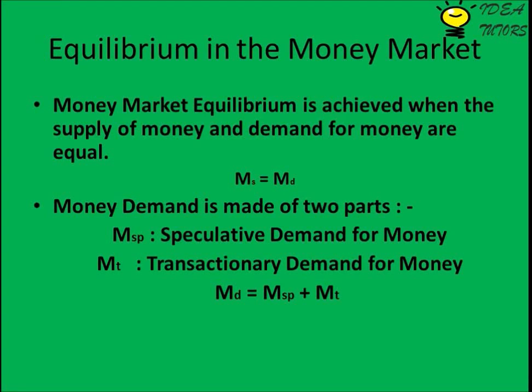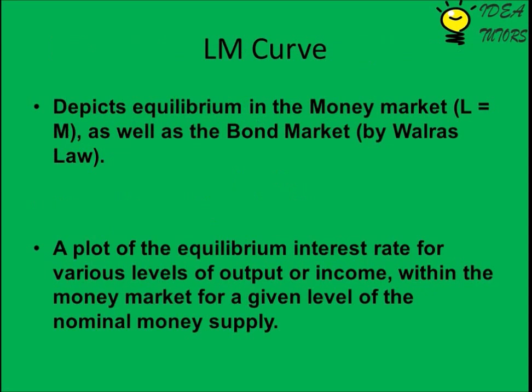Money market equilibrium is achieved when the supply of money and demand for money are equal. Money demand is made of two parts: MSP (speculative demand for money) and MT (transactionary demand for money), so MD equals MSP plus MT. The LM curve depicts equilibrium in the money market (L equals M) as well as the bond market, by Walras' Law — it is a plot of the equilibrium interest rate for various levels of output or income.